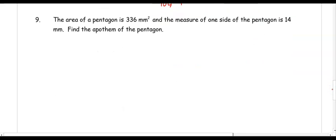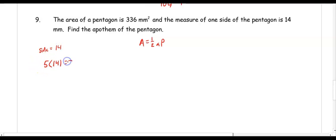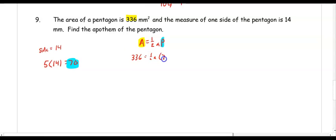In number nine, the area of a pentagon is 336 millimeters squared and one side is 14 millimeters — find the apothem. Since a pentagon has five sides, the perimeter is 5 times 14 equals 70. Substituting into the formula: 336 equals one half times a times 70, so 336 equals 35a. Dividing by 35 gives a equals 9.6 millimeters.